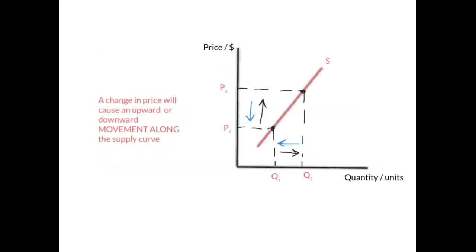The law of supply is visually represented by movements along the supply curve. A change in price will cause an upward or downward movement along the same supply curve. For example, moving from P2 to P1, which is a fall in price, leads to a fall in quantity supplied — not a fall in supply. It's a movement along, so we say fall in quantity supplied from Q2 to Q1.